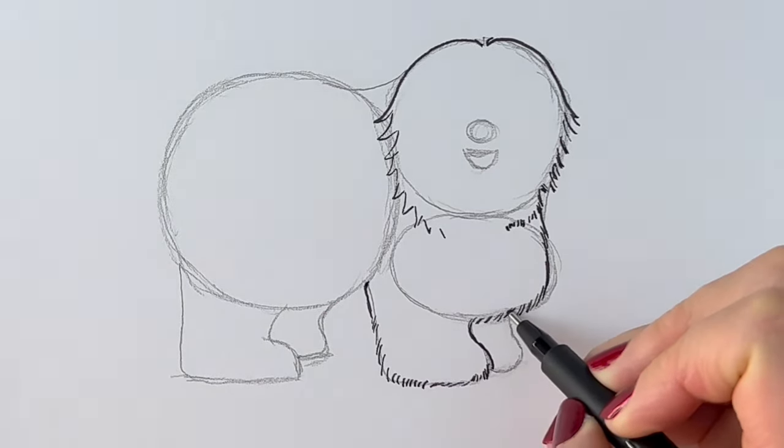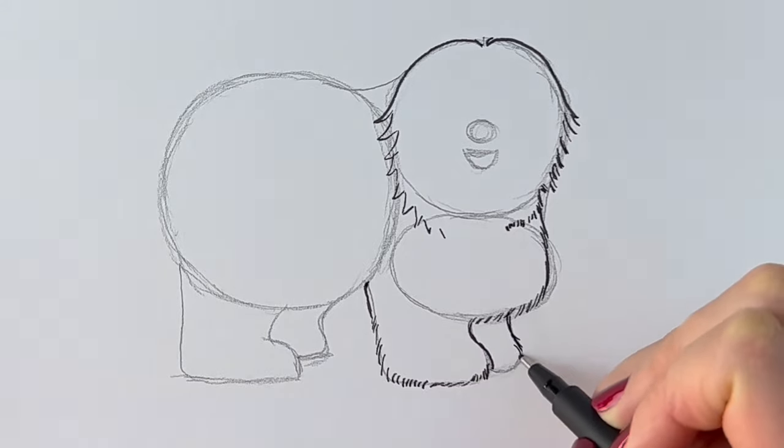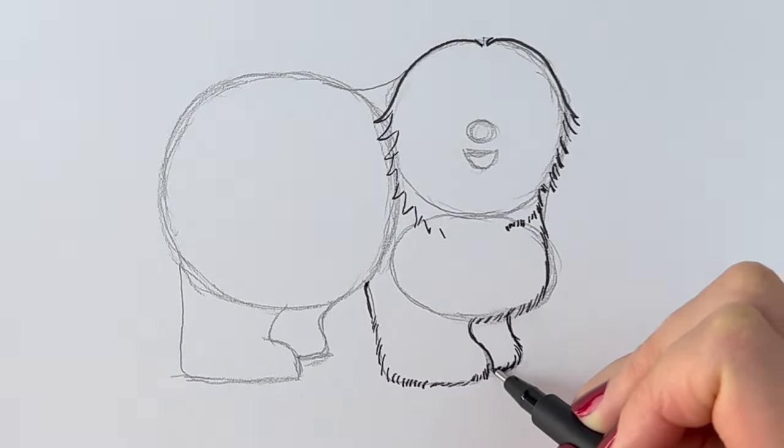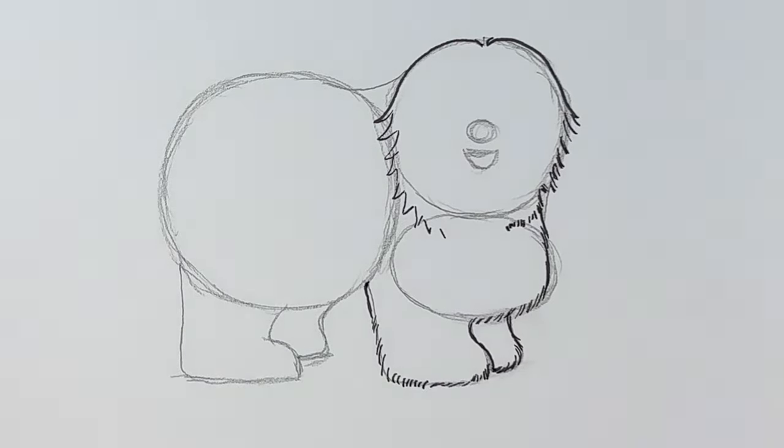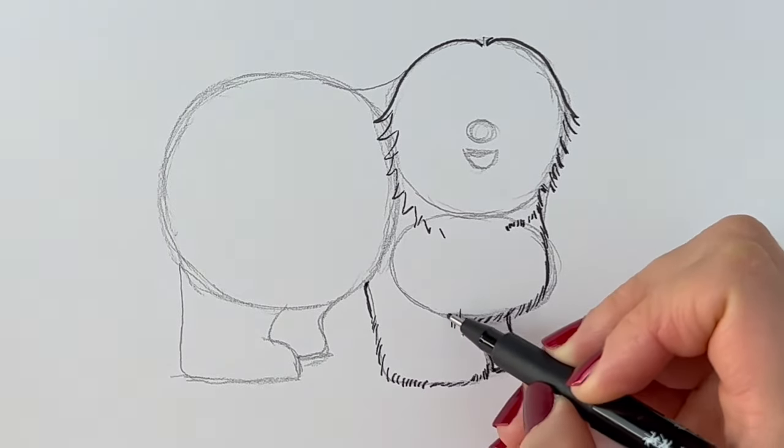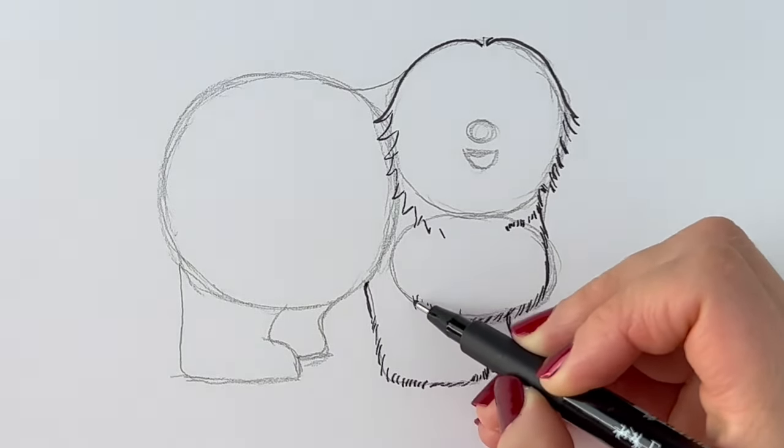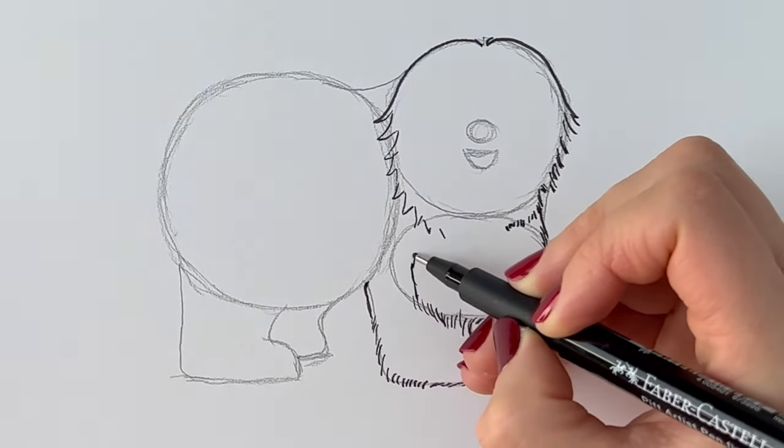I'm going to do the other little foot. Again just using dashes. These little kind of sketchy lines just to show that it's really really super furry. I'm then going to carry on following this oval shape that I did before. And then go upwards here.